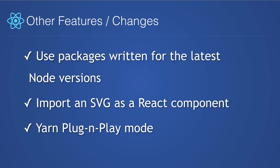Here are some other features and changes. You can now use packages written for the latest version of Node — before, people were having issues with certain packages for Node 10. You can also import an SVG as a React component directly. Before, you would import an SVG and add it to the source attribute for an image, but now you can import it and use it as an actual component. There's also something called Yarn plug and play — usually when you run yarn install, packages are installed and cached inside the Node modules folder, but with plug and play, a new file containing static resolution tables is created with information about what packages are available, how they're linked, and where they're located. This feature is still in experimental mode.